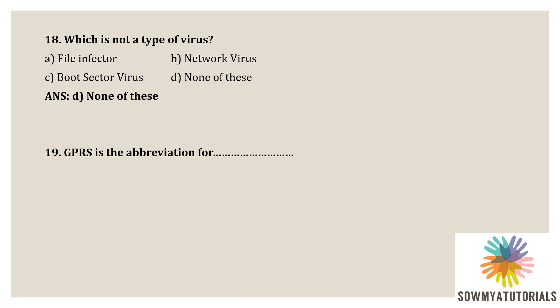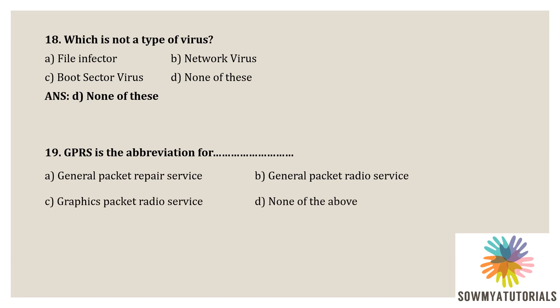Next question: GPRS is abbreviation for — option A - general packet repair service, option B - general packet radio service, option C - graphic packet radio service, option D - none of the above. The expansion of GPRS: the correct option is option B, general packet radio service.